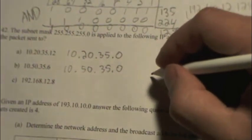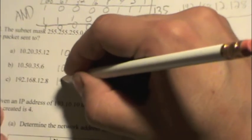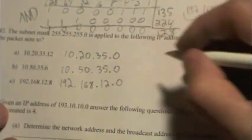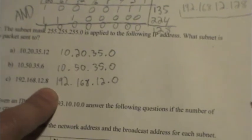10.50.35.0 is the subnet that 6 belongs to. And 192.168.12.0 is the subnet that 12.8 belongs to.